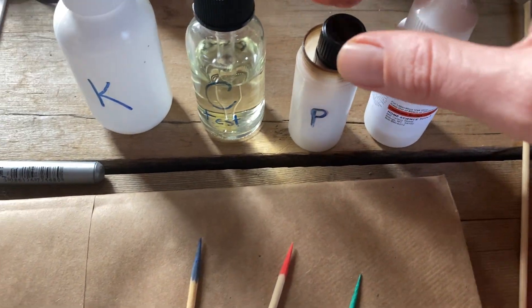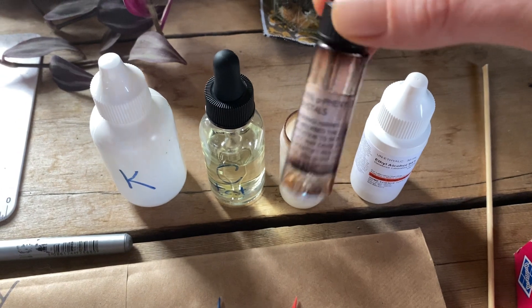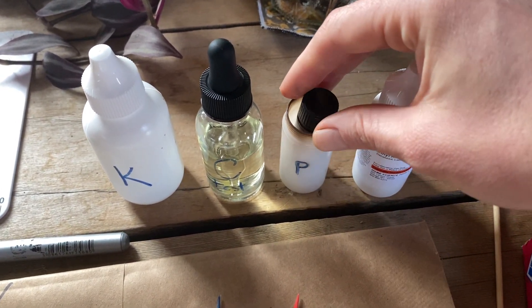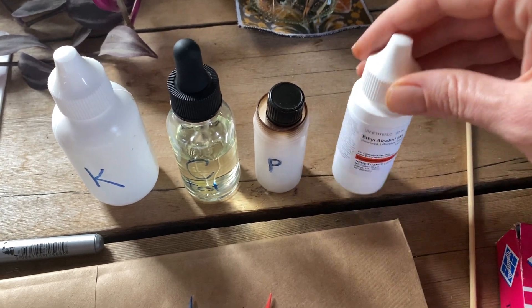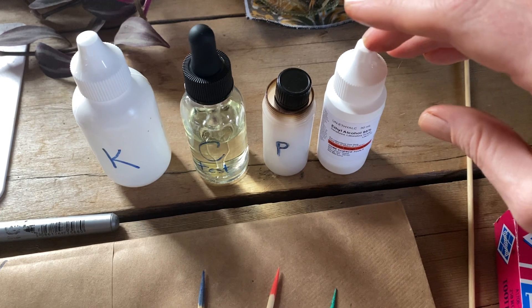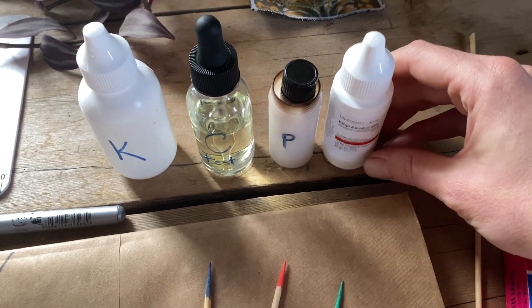And then the P test is actually made up of two components. You use a few crystals of para-phenylenediamine, and you dissolve those crystals in a few drops of 95% ethanol.